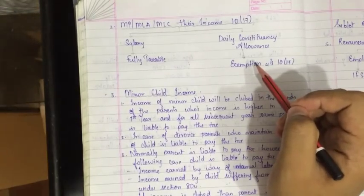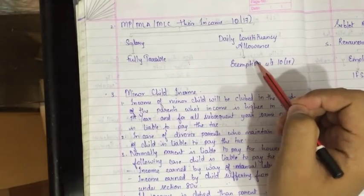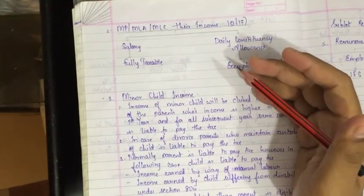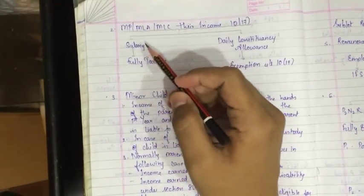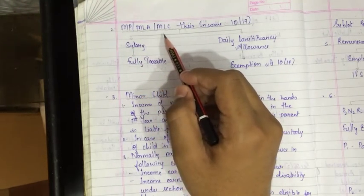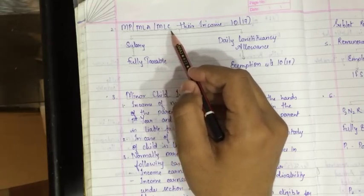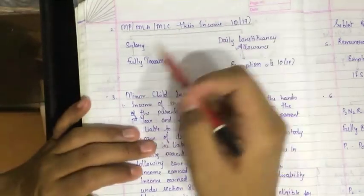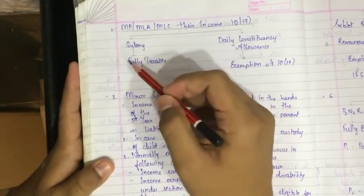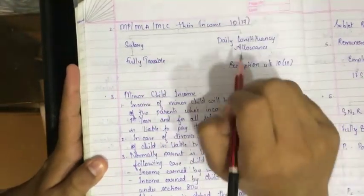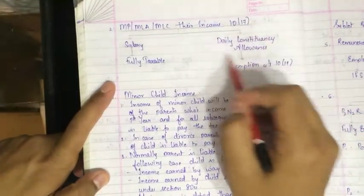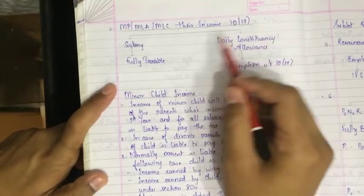Allowances such as traveling expenses, food expenses, and canteen fees given to MPs, MLAs, and government servants are exempt. If the government provides them a salary, that is fully taxable under income from salary. But if they are provided with allowances, those allowances are also a part of salary.